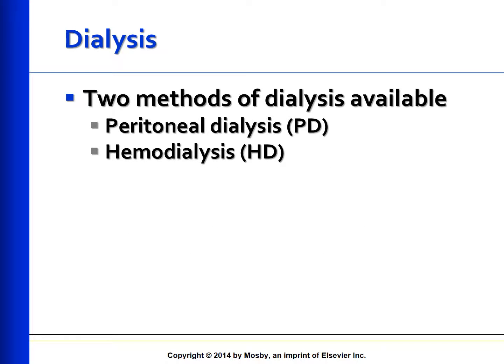There are two types of dialysis: peritoneal dialysis and hemodialysis. In peritoneal dialysis (PD), the peritoneal membrane acts as a semi-permeable membrane. In hemodialysis (HD), an artificial membrane usually made of cellulose-based or synthetic materials is used as a semi-permeable membrane and is in contact with the patient's blood.